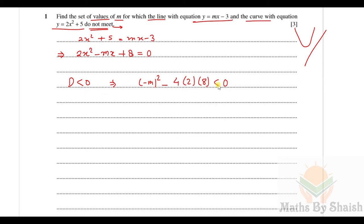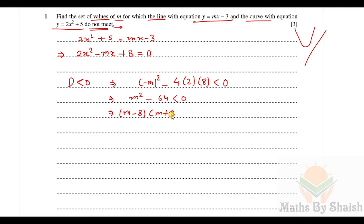So B² − 4AC < 0 gives us M² − 4(2)(8) < 0, which is M² − 64 < 0. Using the difference of squares identity, this factors as (M − 8)(M + 8) < 0.